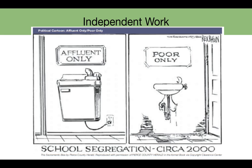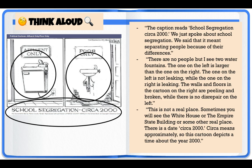Here is that political cartoon. Take a moment to really soak in all the details and the text. It's titled 'Affluent Only / Poor Only.' Let's take a look deeper at this political cartoon and think about how we can work through our thinking and speak our thinking out loud about what we're seeing and noticing. Something I'm noticing is that the caption at the bottom reads: 'School Segregation, circa 2000.'